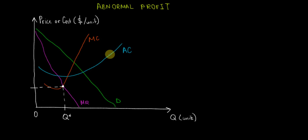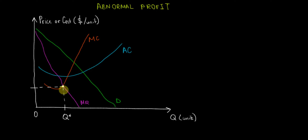The first step: how do we maximize profit? By setting marginal revenue equal to marginal cost. The intersection of these two curves at this white dot is going to give us the profit-maximizing level of quantity, Q*.